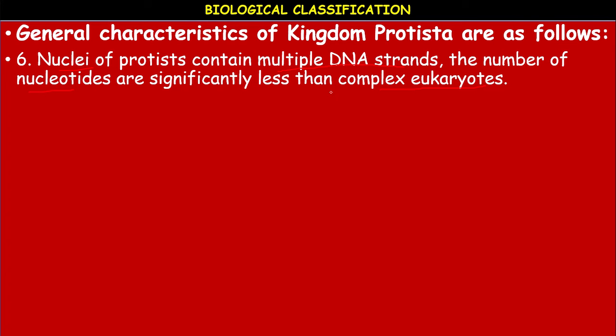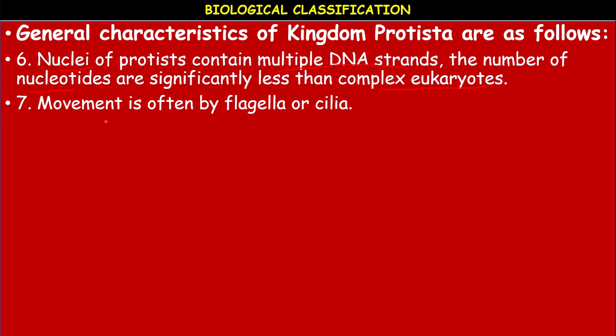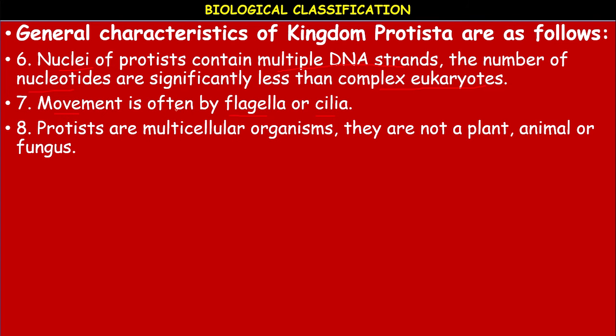Complex eukaryotes include Fungi, Plantae, and Animalia. Compared to them, the number of nucleotides in the DNA of Protista are fewer. Some Protista can move from place to place; movement often occurs by means of flagella or cilia, which are the locomotory organelles.